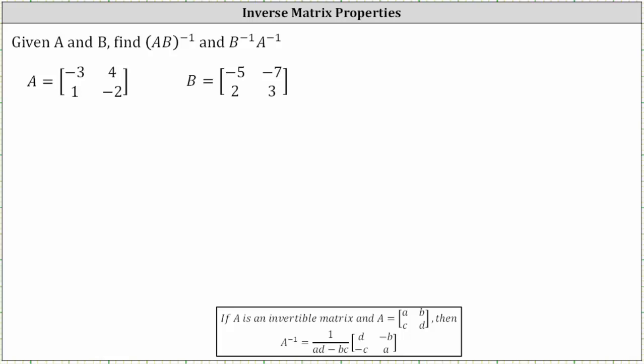Given matrix A and matrix B, we're asked to find the inverse of AB and B inverse times A inverse. Let's begin by determining A times B as well as B inverse and A inverse.